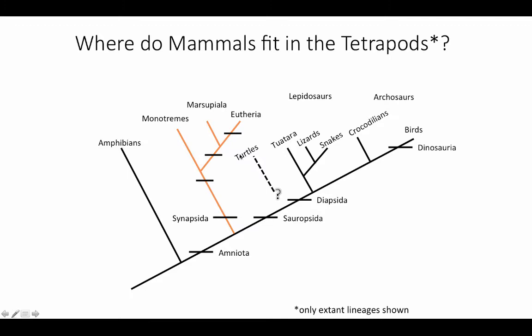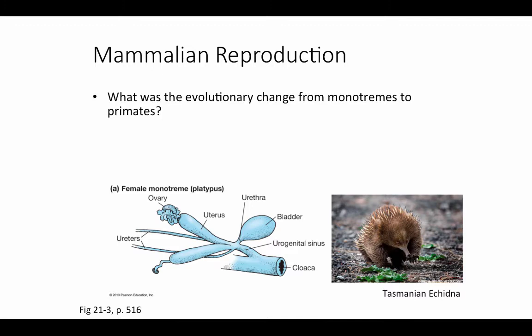The marsupials and eutherians diverged much later in evolutionary history. These three living lineages of mammals are distinguished primarily based on their different reproductive strategies. Let's take a look at that.